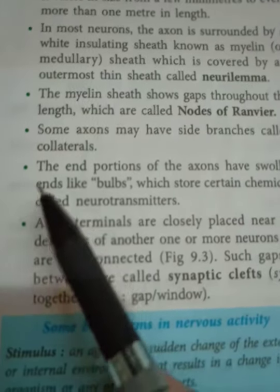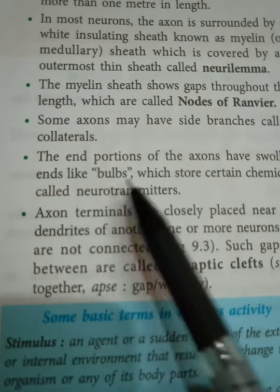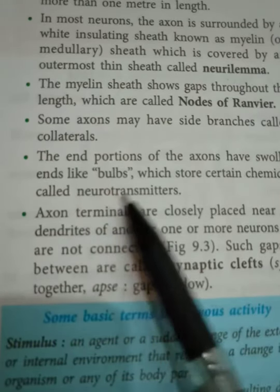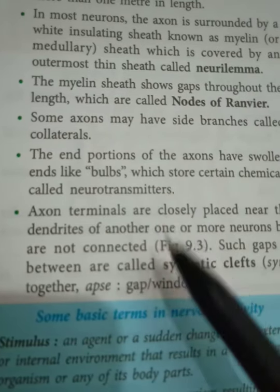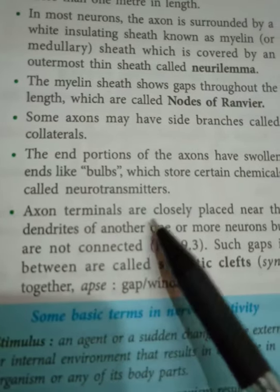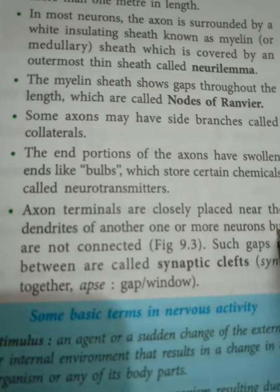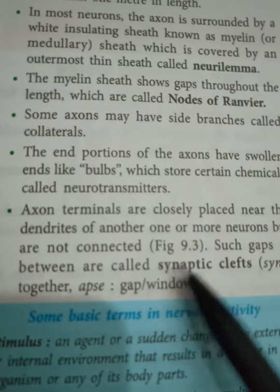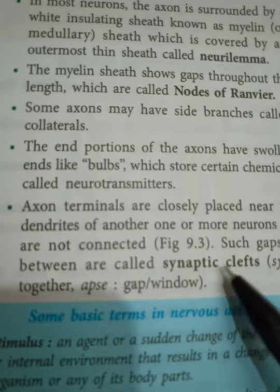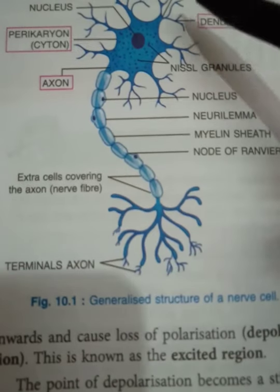Axons may also have side branches called collaterals. The end portions of the axon are swollen and bulb-like, and those are called bulbs which store certain chemicals called neurotransmitters — the name to learn is acetylcholine, which will come later. Axon terminals are closely placed near the dendrites of another neuron or more neurons, but are not connected — there is still a gap. Such gaps in between are called the synaptic cleft.